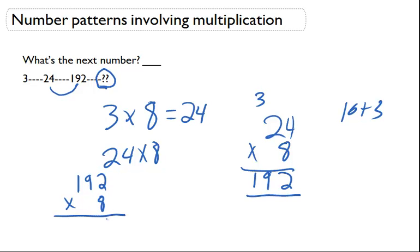So 8 times 2 is 16, carry the 1. 8 times 9 is 72, plus the 1, which is going to give me 73. And I'm going to carry that 7 up here. And 8 times 1 is 8, plus 7 is going to give me 15. So the answer to this question, what's the next number is 1536.